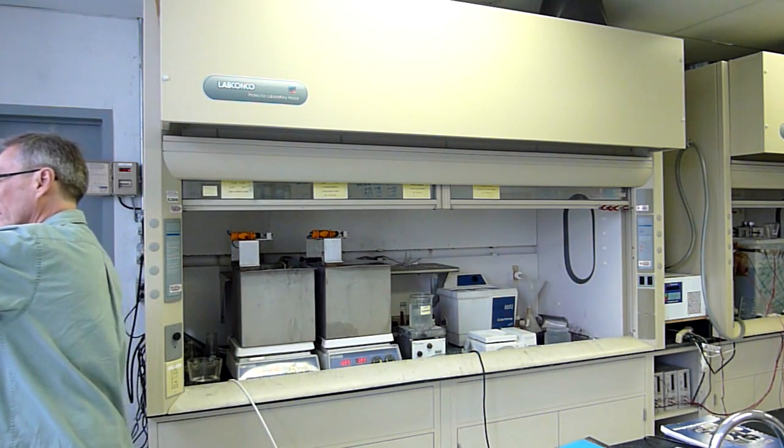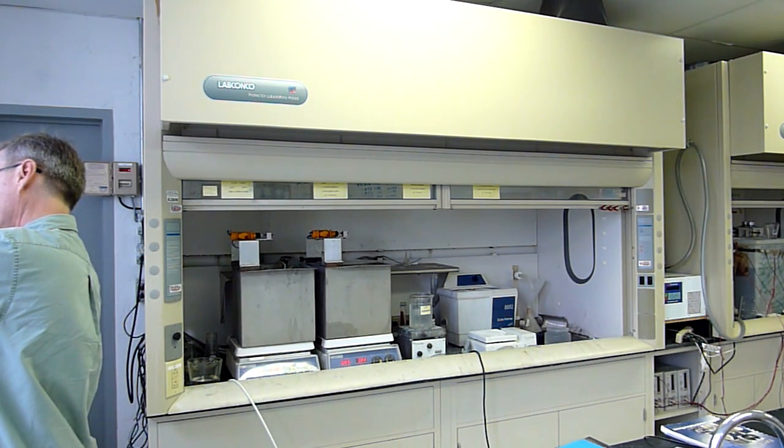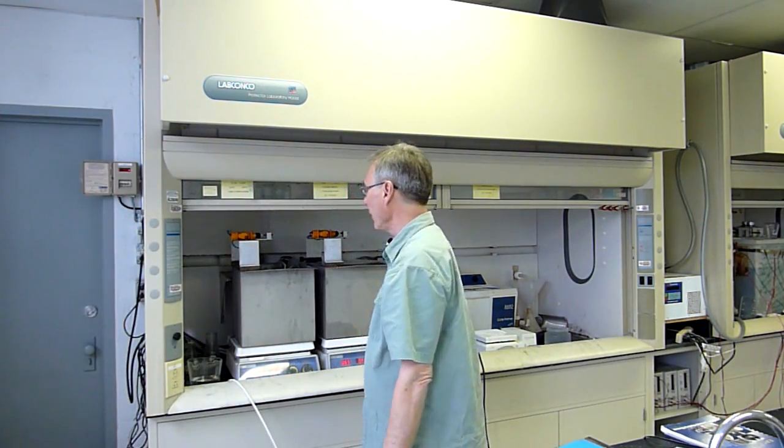Now, we've already measured the surface area, calculated the surface area of this part at about 12 square inches. We typically plate gold at about 20 milliamps per square inch. So we're going to set our plating supply to about 240-250 milliamps of plating current. Set for 240-250 milliamps.